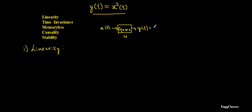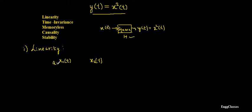So feeding input x(t) to this system gives output x²(t). That is the nature of the operator h. To test for linearity, I will consider two different inputs, x1(t) and x2(t). I will scale x1(t) with a1, scale x2(t) with a2, then add them together.